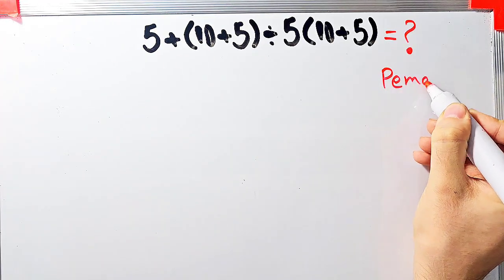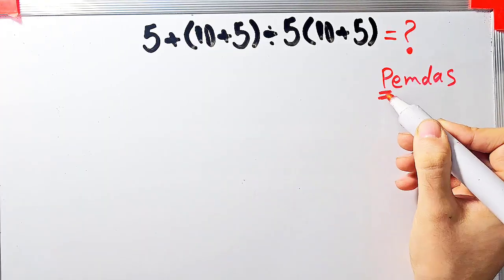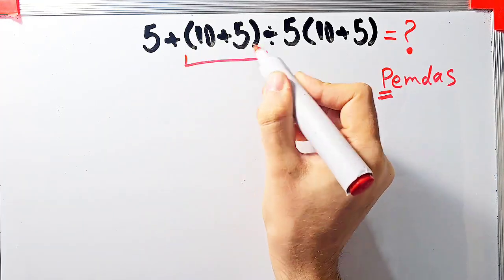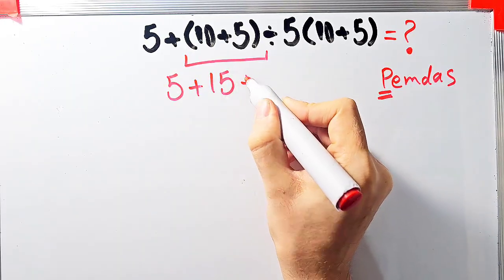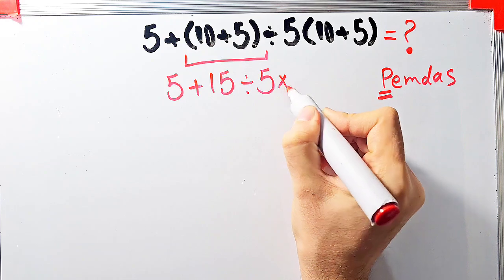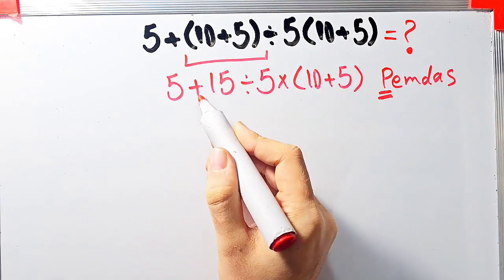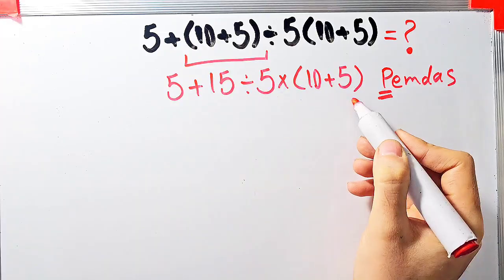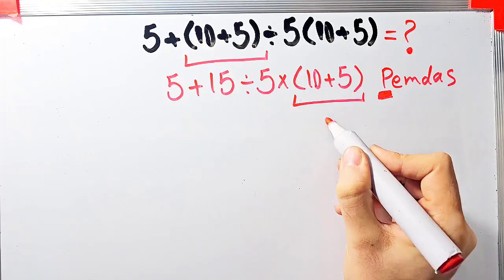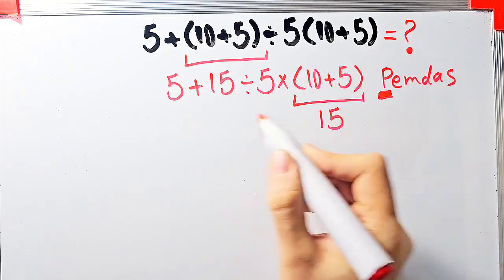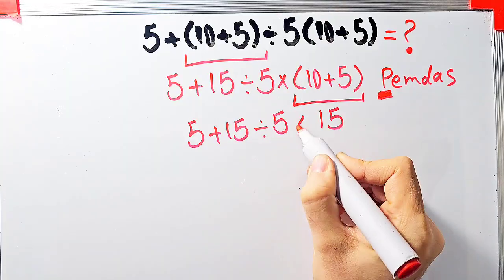According to the PEMDAS rule, first we simplify the parentheses. Inside the first parentheses we have 10 plus 5, which equals 15. Now we have 5 plus 15 divided by 5, then times 10 plus 5. We still have parentheses, so we simplify again: 10 plus 5 equals 15. Now the question is 5 plus 15 divided by 5, then times 15.